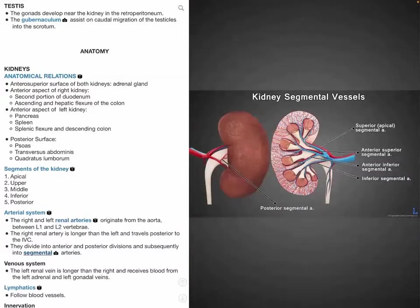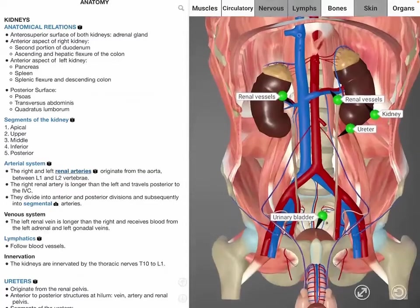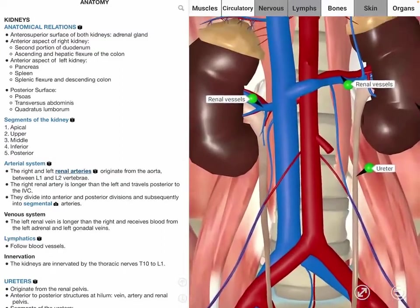In terms of the venous system, the left renal vein travels anterior to the aorta and receives blood from the left adrenal and left gonadal veins, which differs from the right renal vein in that it does not receive blood from the right gonadal vein as that drains directly into the IVC.